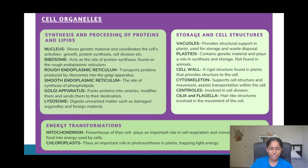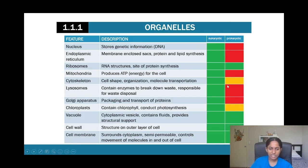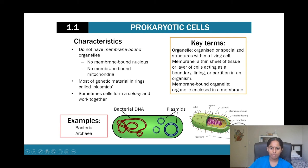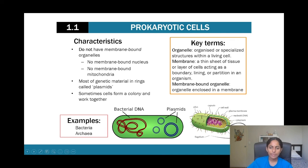Two more organelles worth mentioning: centrioles, which are mainly involved in cell division and only appear during that process; and cilia and flagella, which are tail-like structures found mainly on prokaryotes that help with navigation and movement. Some cells also have similar tail-like structures used for movement.